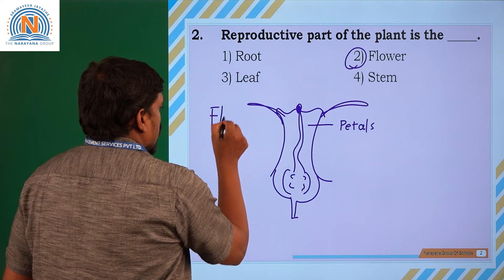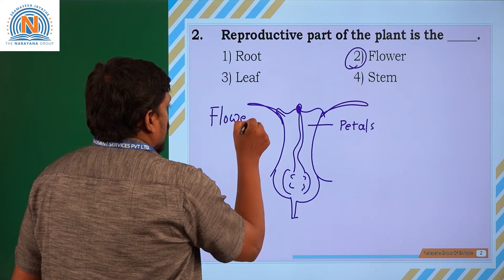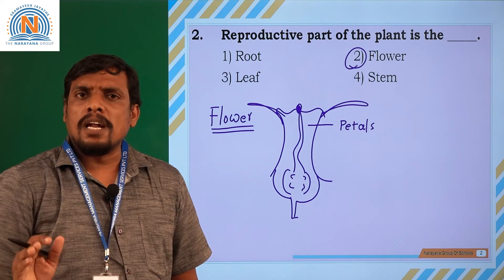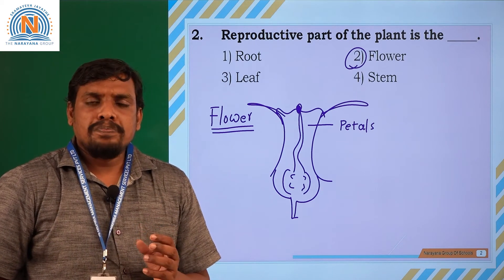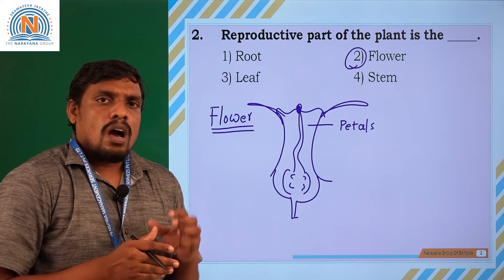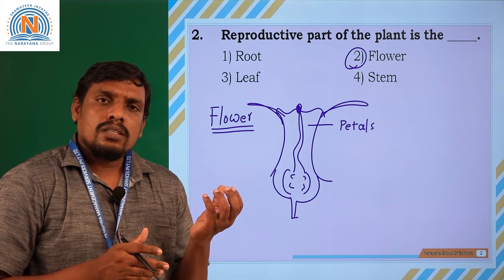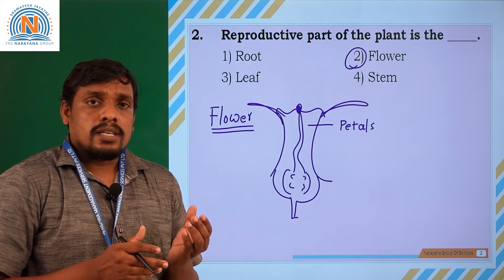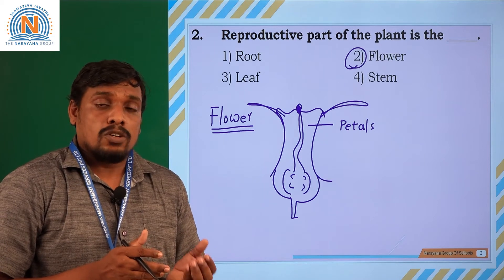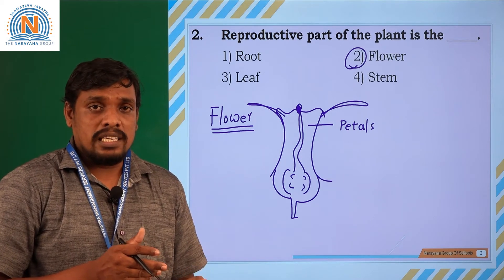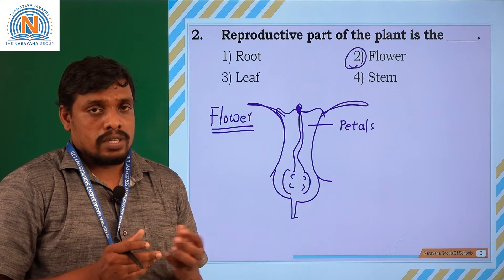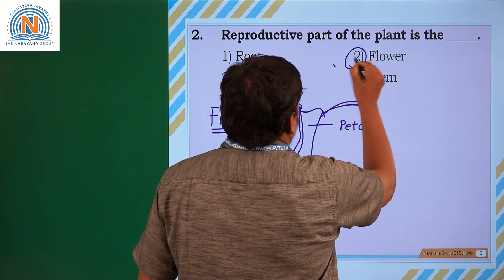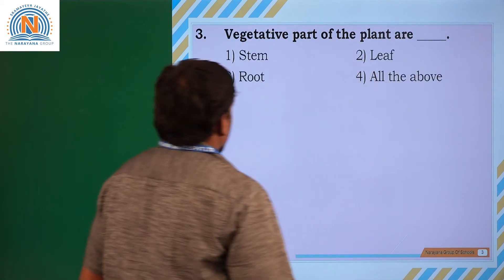The flower is considered the major reproductive unit of some plants, not all plants. In the plant kingdom, not all plants reproduce by flower. Some plants reproduce by certain body parts like roots, stem, and leaves. We will discuss all those things in further classes. So option 2 is the suitable answer for this question.